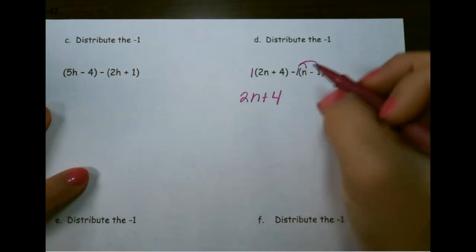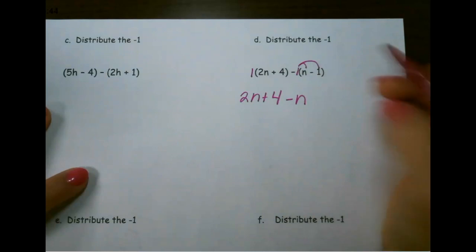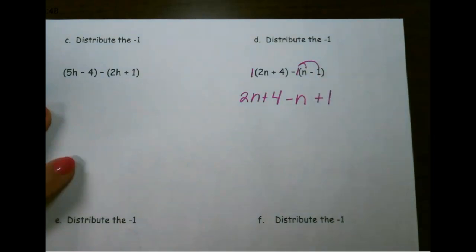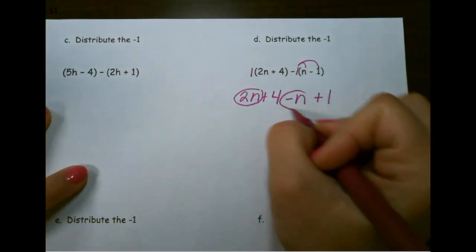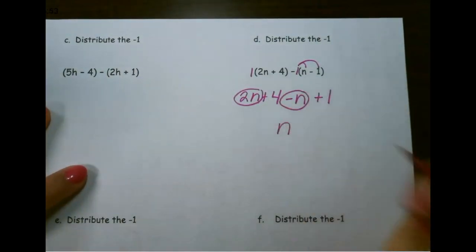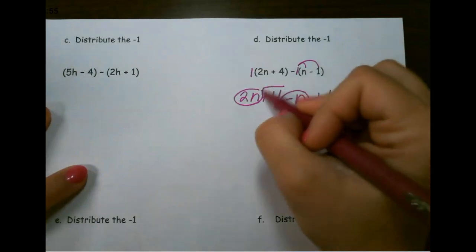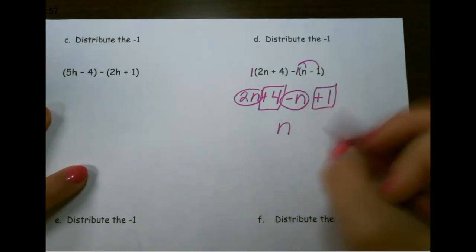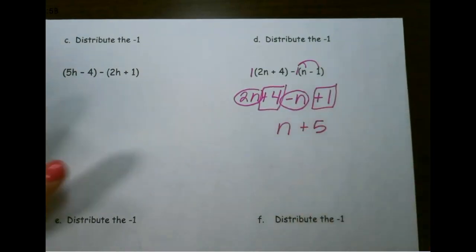So n is going to become negative n, and minus 1 becomes plus 1. So that's a little different from our first two examples. 2n minus n would give me 1n, or just n, and then 4 plus 1 would give me 5.